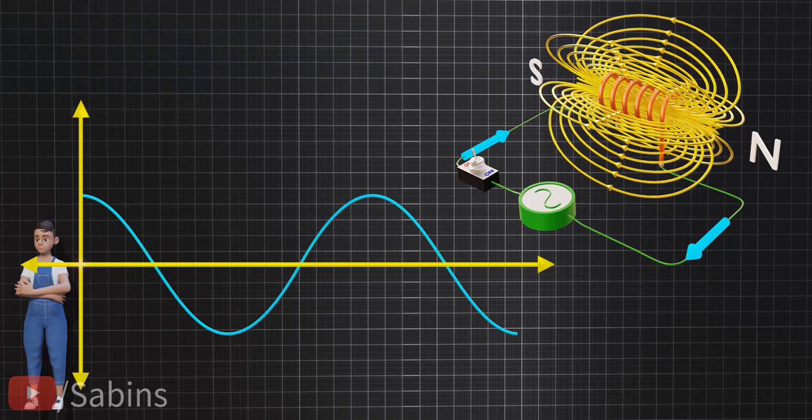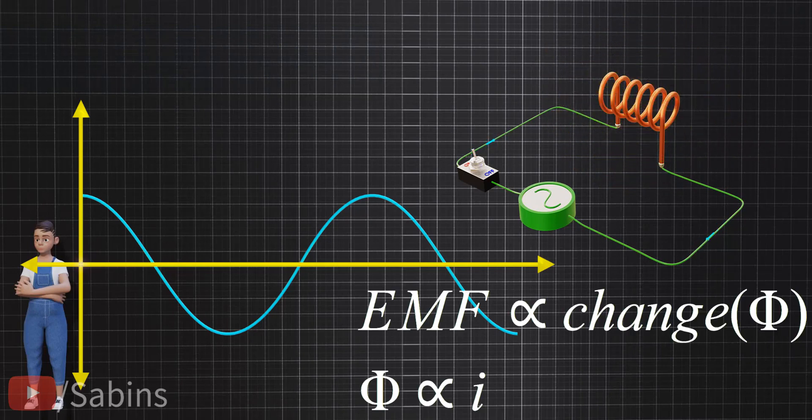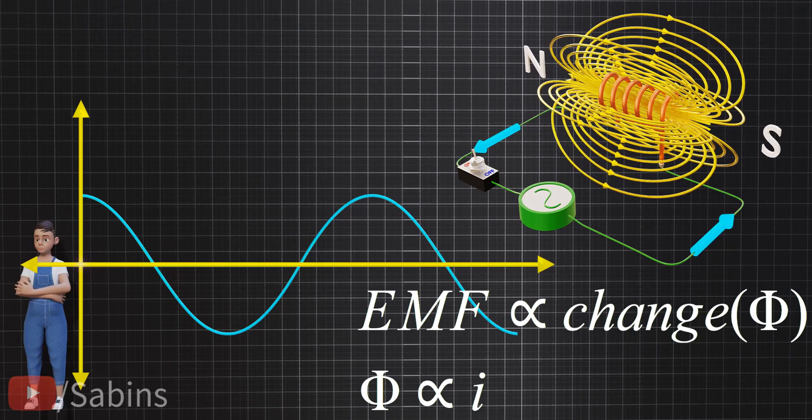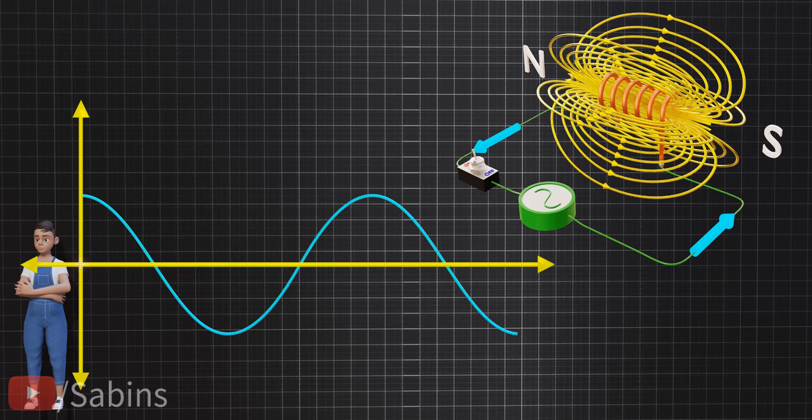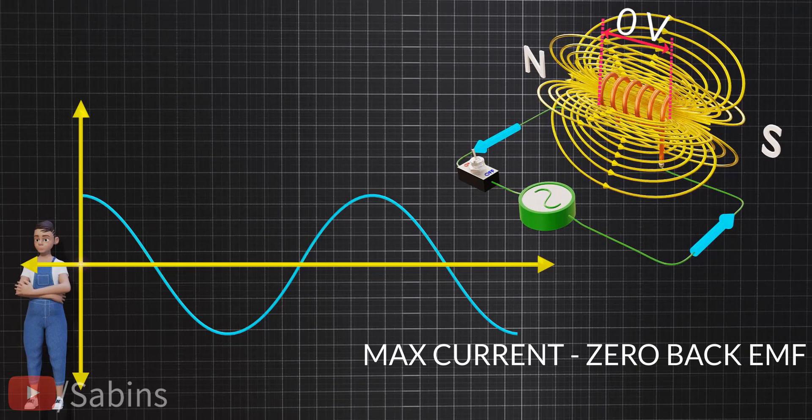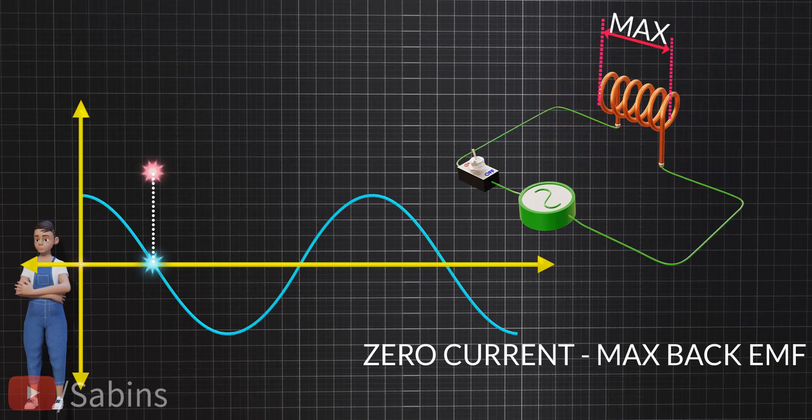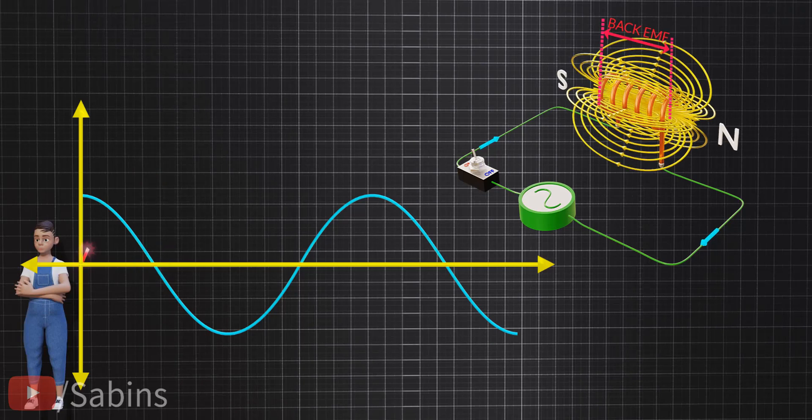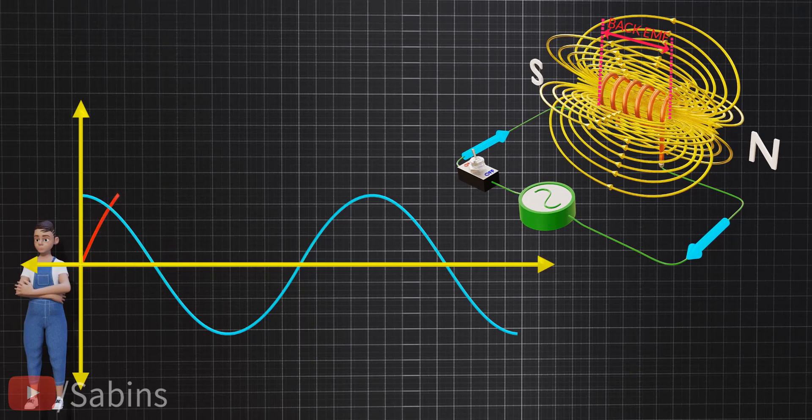The EMF it induces is proportional to the change in current. Therefore, the EMF across the inductor is zero when the current is at maximum, and the EMF is at maximum when the current is zero. In short, the back EMF will vary as shown.